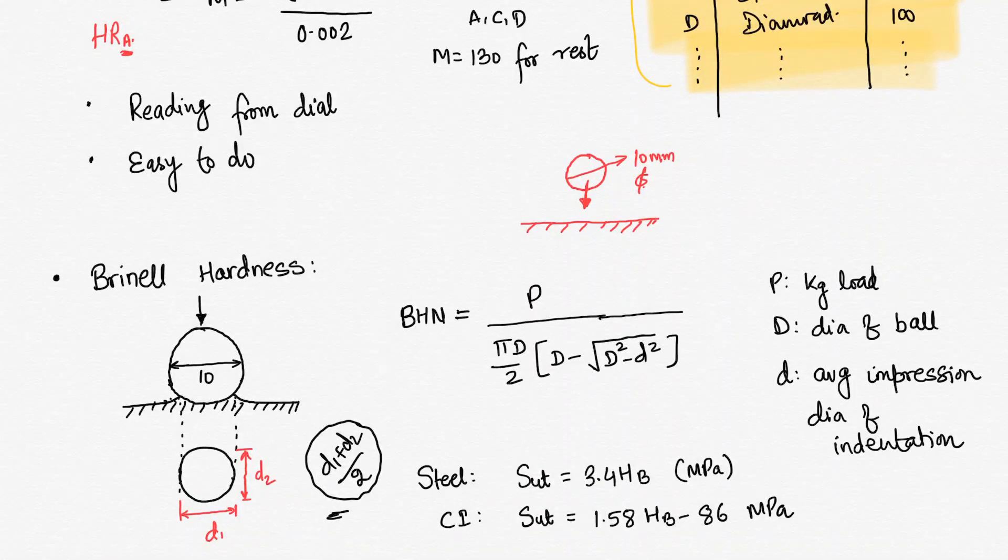The load value depends upon which material we are testing. Usually it is 3000 kg. So here is the load value P, that will be usually 3000 kg. But if we are doing a softer material, then 3000 will be much more. In that case we can use 1500 or 500 kg also. We will use less load value.